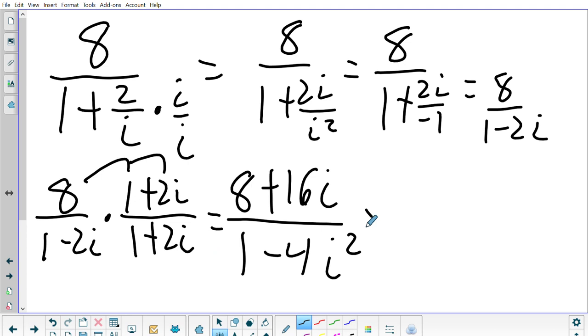And then here I get 1 minus 4i squared. And then i squared turns into negative 1. And then negative 4 and negative 1 turn into positive 4.